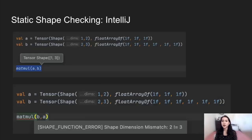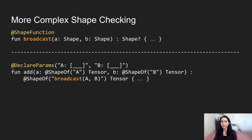Here are examples showing what the plugin looks like in IntelliJ — shape inspection up top and an error message on the bottom — all happening during development, so users can see errors immediately as they type. Now let's look at a more complex shape-checking example. Broadcast is a very dynamic shape transformation that lets users add tensors of different shapes. Users can write the broadcast shape function imperatively and even call other functions. Notice that the return shape of add is a call to the shape function broadcast on A and B. This extensibility allows users to define custom shape-checking logic for new tensor operations.